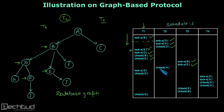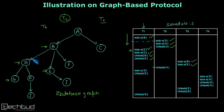Transaction T3 stops and transaction T2 resumes with the operation unlock H. Unlocking is done at any point of time, so we unlock item H. After this, transaction T1 again resumes and requests a lock on database item G. Database item G has parent D, and D is locked by transaction T1 only. So this lock on G is granted.